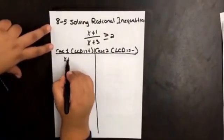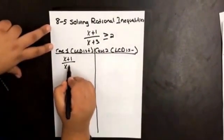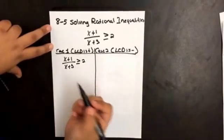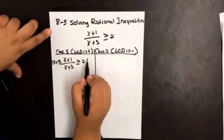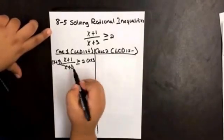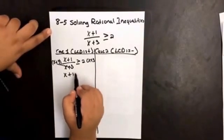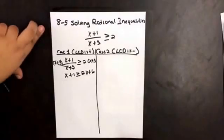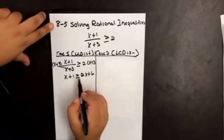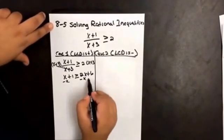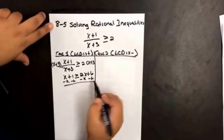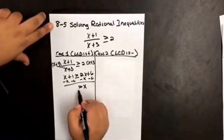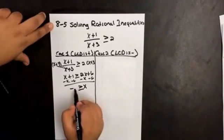So we're going to solve x plus 1 over x plus 3 is greater than or equal to 2. Multiply both sides by x plus 3. So then we have x plus 1 is greater than or equal to 2x plus 6. We want to combine our x's. So then we have x is less than or equal to negative 5.